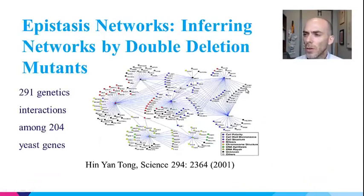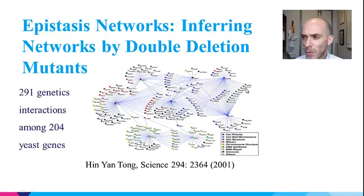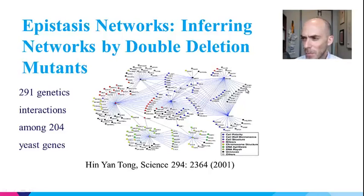So far we looked at direct physical molecular interactions — cell signaling, gene regulatory, and protein-protein interactions. However, there are other types of molecular biological networks that do not require direct physical interaction. Here is an example of an epistasis network from double deletions in yeast.